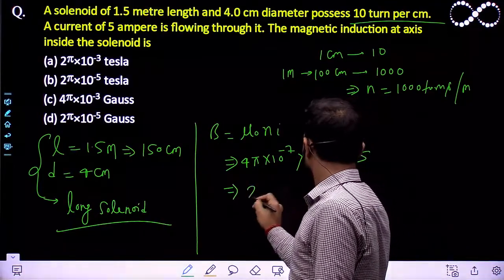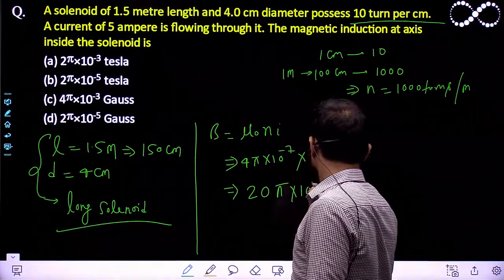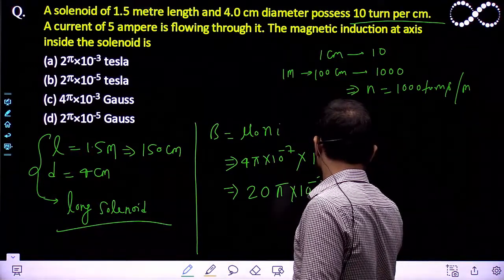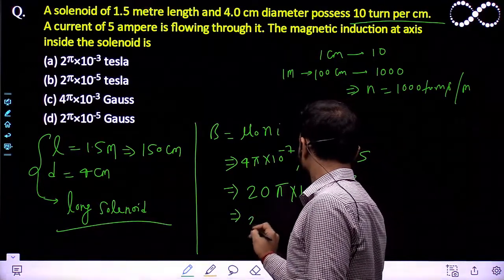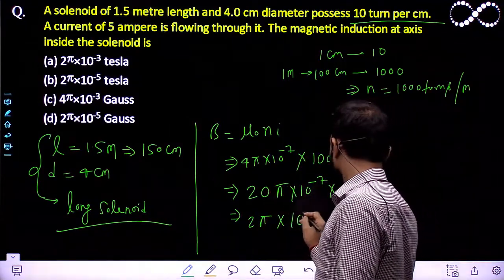This can be written like 20π into 10⁻⁷ into 10³. That will become 2π - this 3 will become 4 here and that will become 10⁻³.